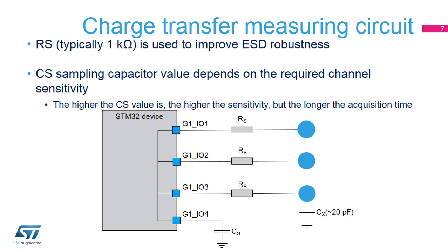In order for a touch-sensing GPIO to be controlled by the TSC, a sampling capacitor I/O must be configured in alternate output open drain mode. In addition, to avoid artifacts, the Schmitt trigger hysteresis must be disabled. A channel I/O must be configured in alternate output push-pull mode.